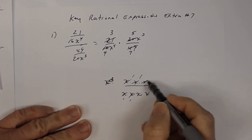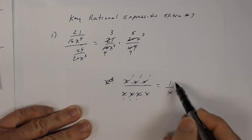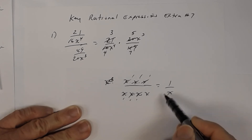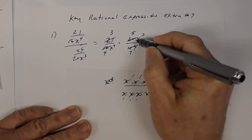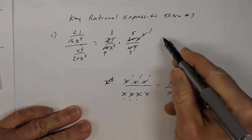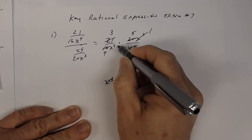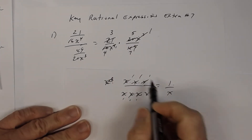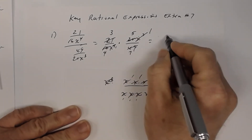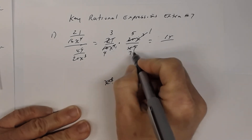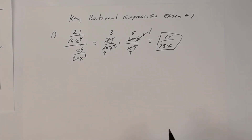You reduce the common x factors: three of the x's cancel, leaving one factor of x in the denominator and one in the numerator. So all three factors of x from x cubed divide out against three of the four from x to the fourth, leaving one x remaining. Multiplying what's left: three times five times one is fifteen, and four times x times seven is twenty-eight x. So number one is fifteen divided by twenty-eight x.